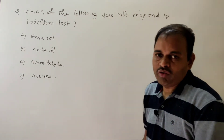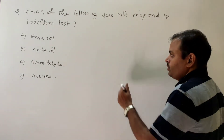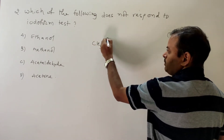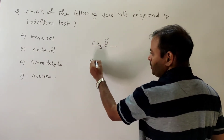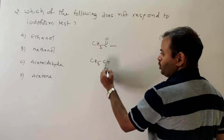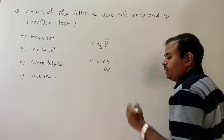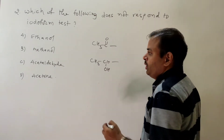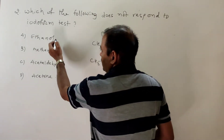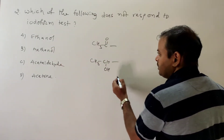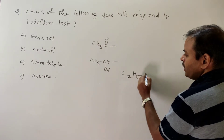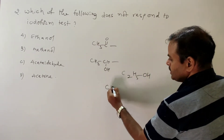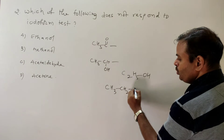Second question: which of the following does not respond to the iodoform test? As discussed, compounds having the CH3CO group or CH3CHOH group give a positive result for the iodoform test. Ethanol is C2H5OH, which is CH3CH2OH.